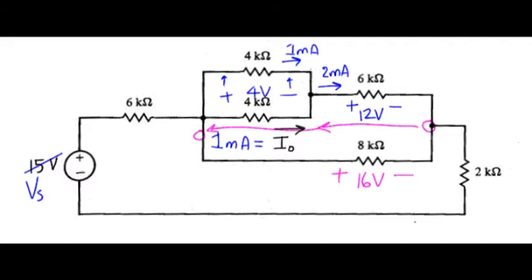16 volts divided by 8K leads to 2 milliamps, which when added to the 2 milliamp current up there means we've got 4 milliamps.